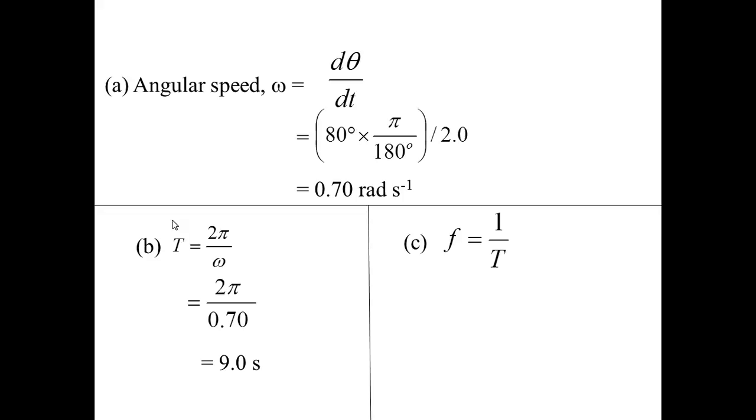And C, you are asked to find the frequency. Frequency is the reciprocal of the period time. So the answer is 1 over 9, which is 0.11 hertz.